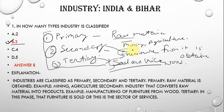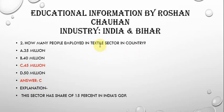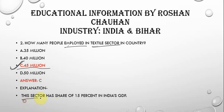The next question is: how many people are employed in the textile sector in India? The correct answer is 45 million people. This sector has a share of 15% in India's GDP, making it very important for the Indian economy.